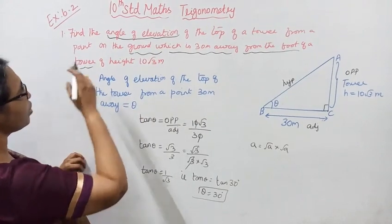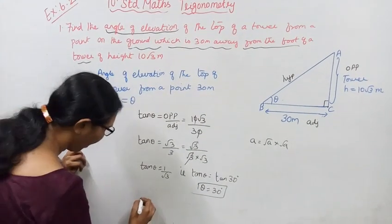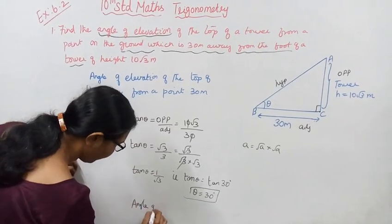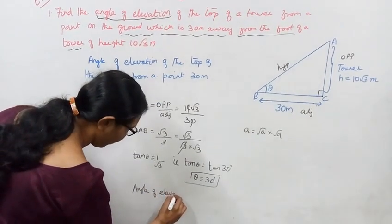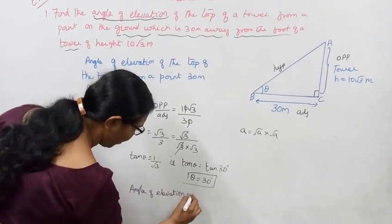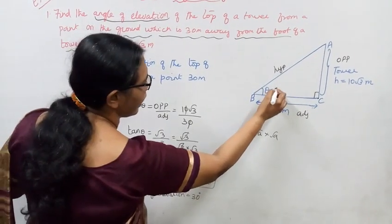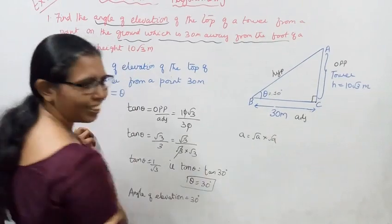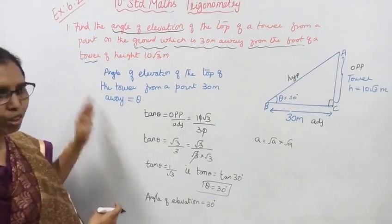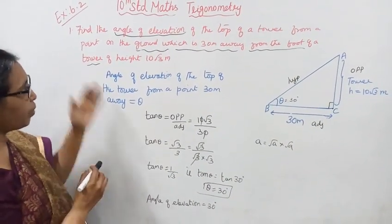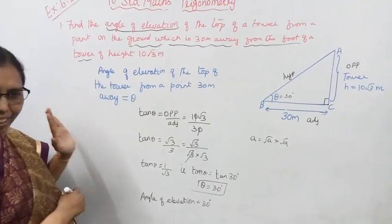So the angle of elevation of the top of the tower from the point on the ground is 30 degrees. That is the answer.